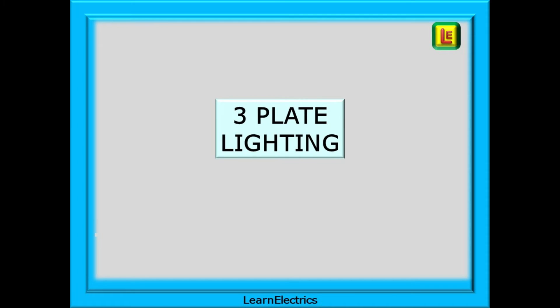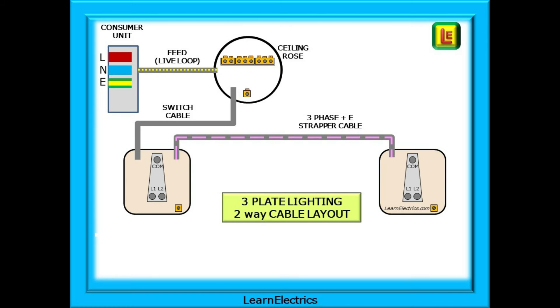Now we can look at three-plate lighting circuits. Shown here is the cable layout for a three-plate two-way lighting circuit. The feed or live loop cable marked with yellow dots goes directly to the ceiling rows not to the switch.